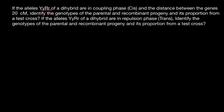Here is the genotype of one parent and we are told that this parent is dihybrid. Imagine two homologous chromosomes: on one chromosome we have dominant allele Y and dominant allele R, and on the other homologous chromosome recessive allele Y and recessive allele R. We have two loci, and on one chromosome we have two dominant alleles, dominant Y and R — we call this the cis form, just like in chemistry.